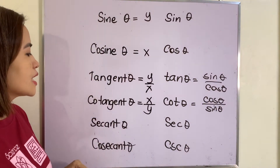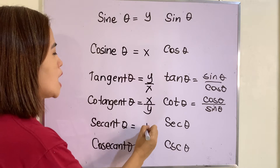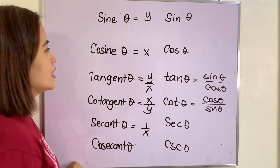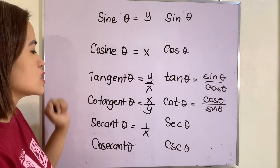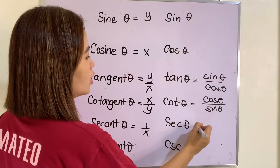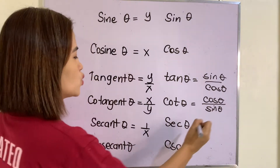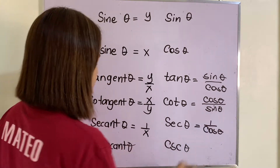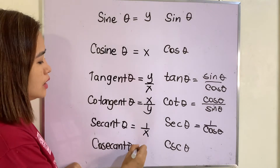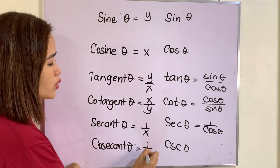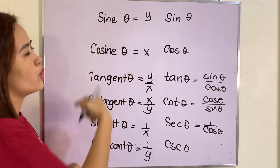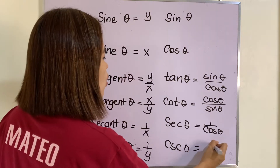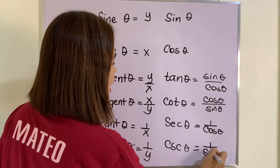For secant, we have one over x — that is the reciprocal of cosine, meaning secant of theta is equivalent to one over cosine of theta. And for cosecant, this one is equal to one over y — that is the reciprocal of sine, so this one is equal to one over sine theta.